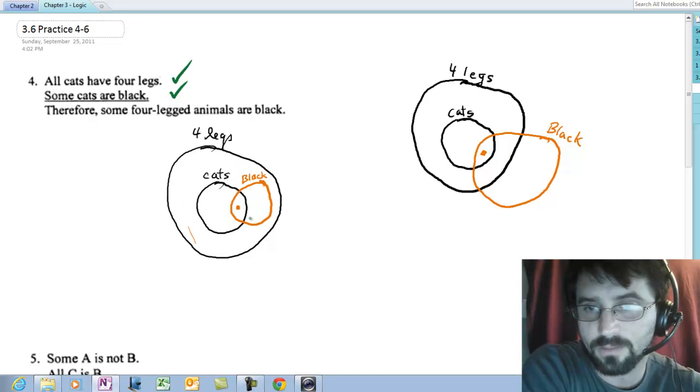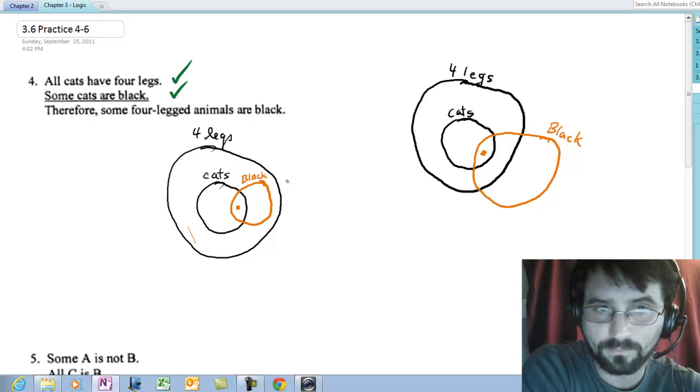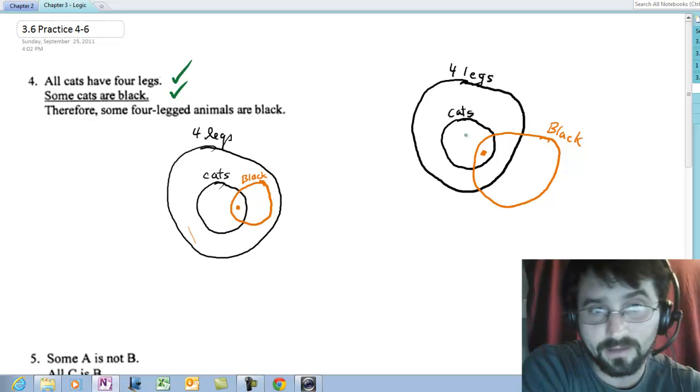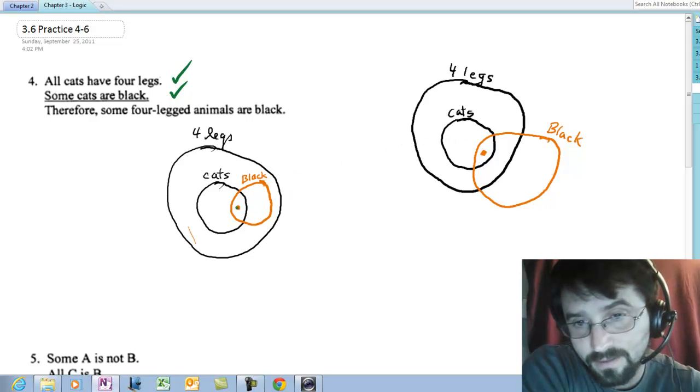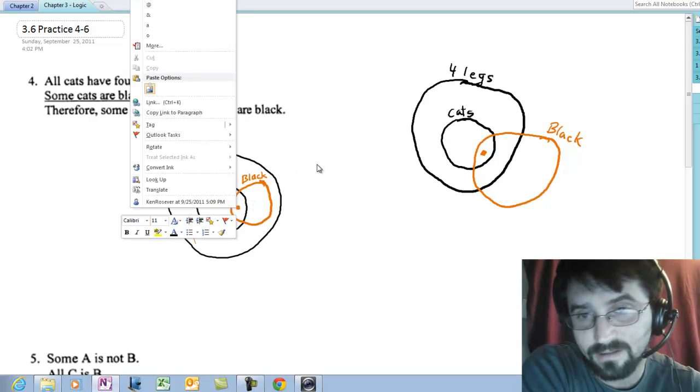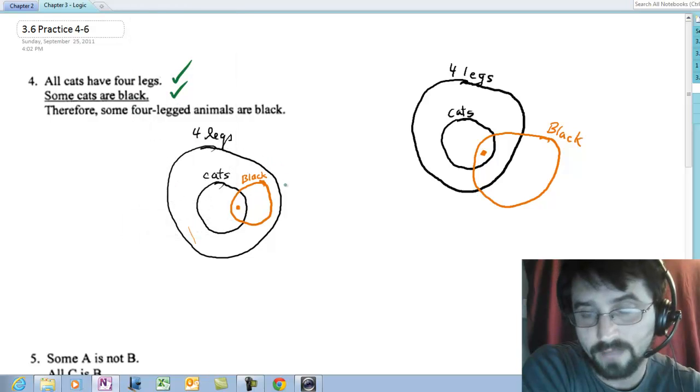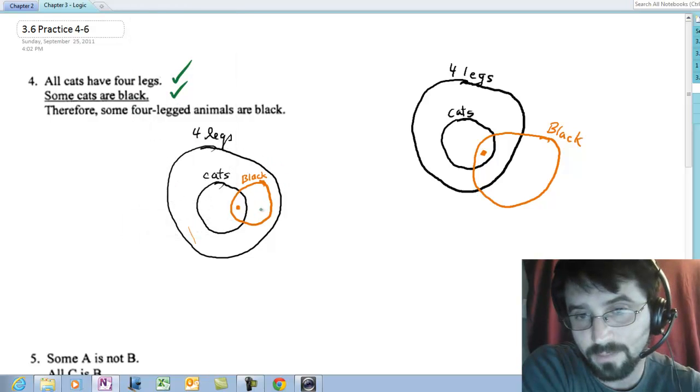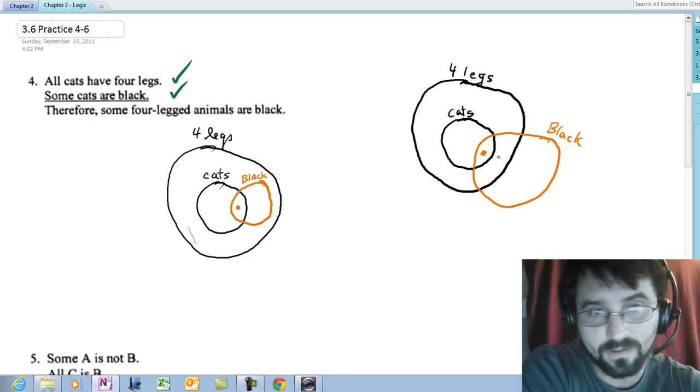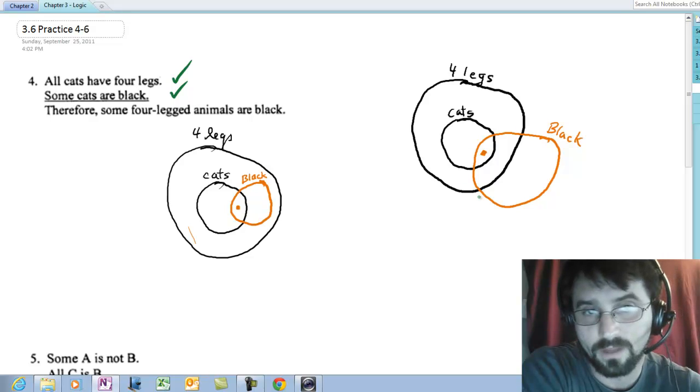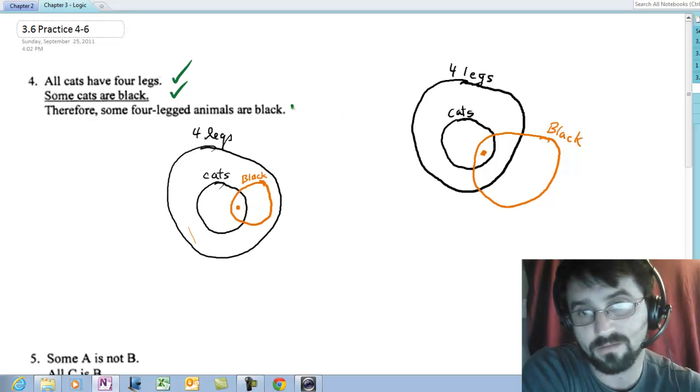Yeah, because no matter how I look at it, this dot is inside four legs. So even if this is empty out here, or this is empty, and this is empty, it doesn't matter. I still have at least one four-legged animal that is black. So this is valid.